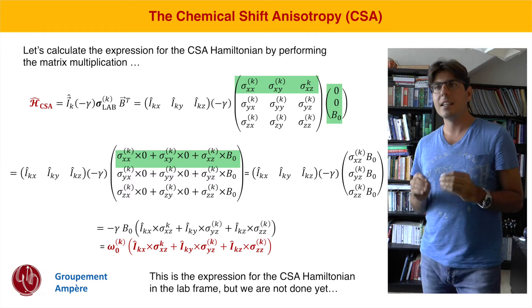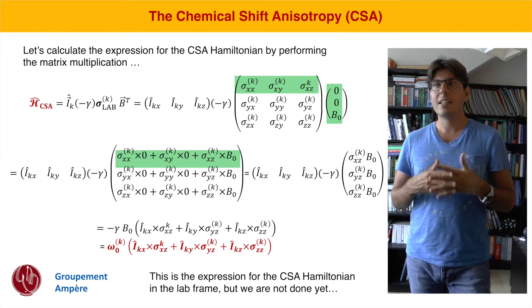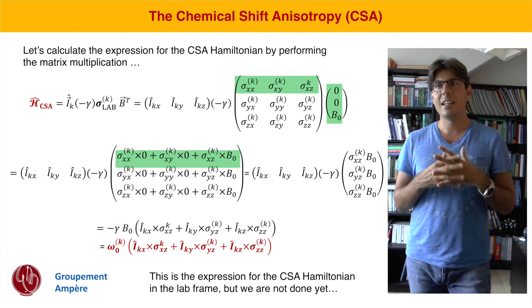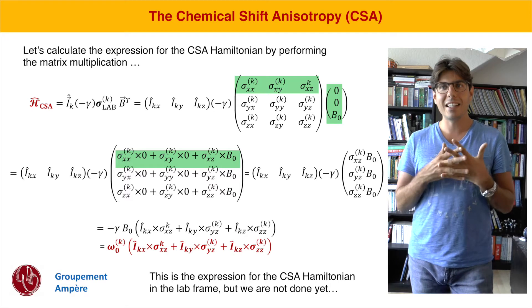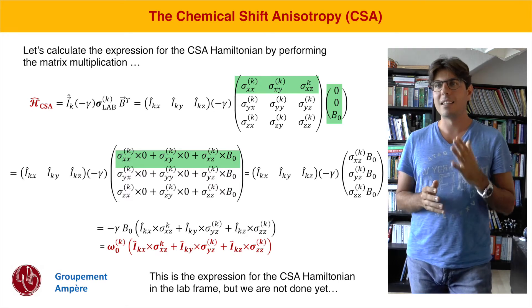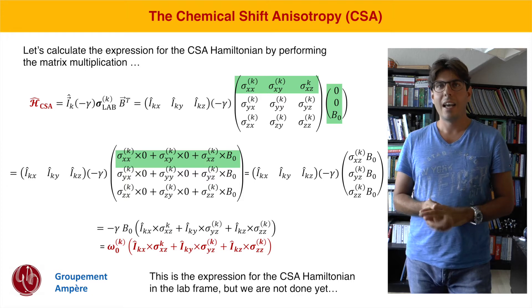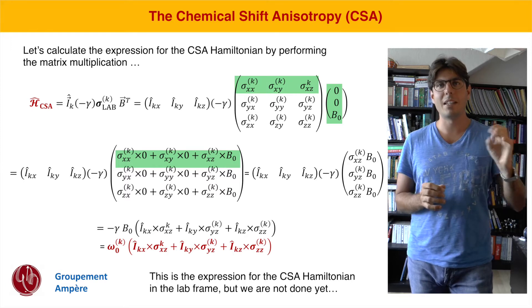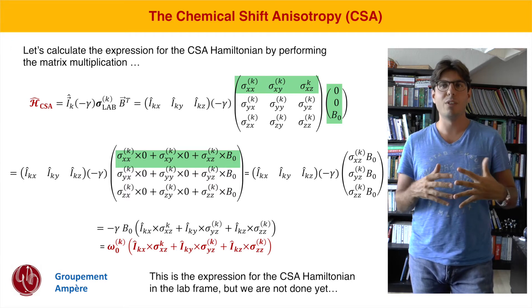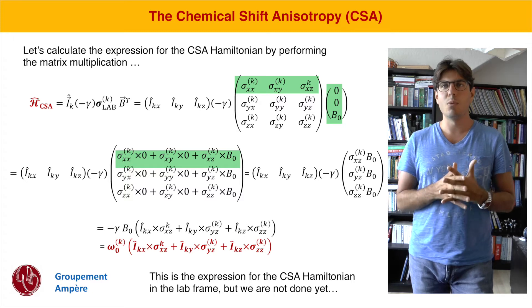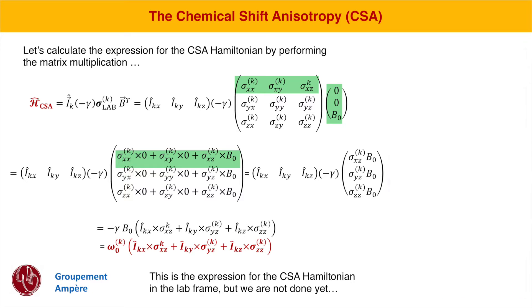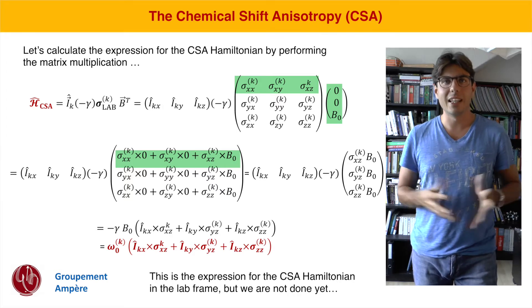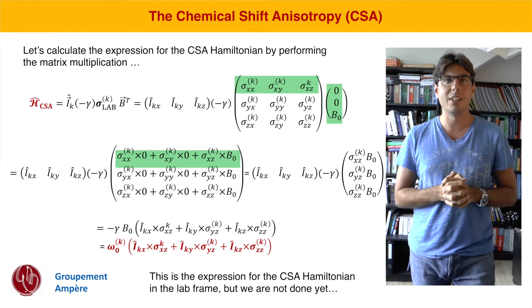What we get in the end is minus gamma times B₀ times the sum from our matrix multiplication: Ikx times sigma_xz, plus Iky times sigma_yz, plus Ikz times sigma_zz. Since minus gamma times B₀ equals the Larmor frequency omega₀, we can replace it accordingly. The calculations are straightforward and we obtain a nice expression for our chemical shift Hamiltonian in the lab frame.